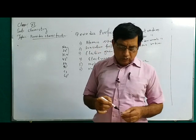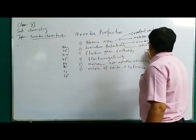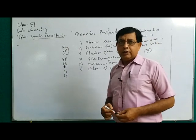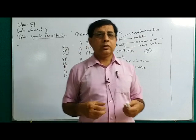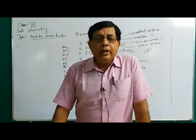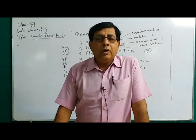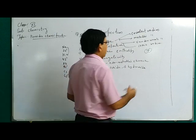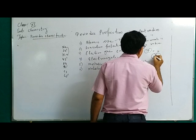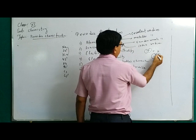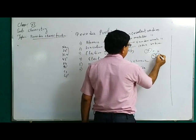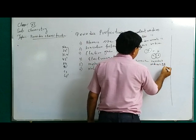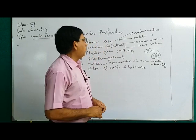What is covalent radius? Consider two oxygen atoms overlapping to form an oxygen molecule. Half of the internuclear distance between two bonded atoms of the same type is called covalent radius. When two hydrogen atoms, or two oxygen atoms, or two chlorine atoms form a covalent bond by overlapping, then half of the internuclear distance between the two covalently bonded atoms of the same type is the covalent radius. If A and B are the nuclei of two bonded hydrogen atoms, then covalent radius equals AB divided by 2.